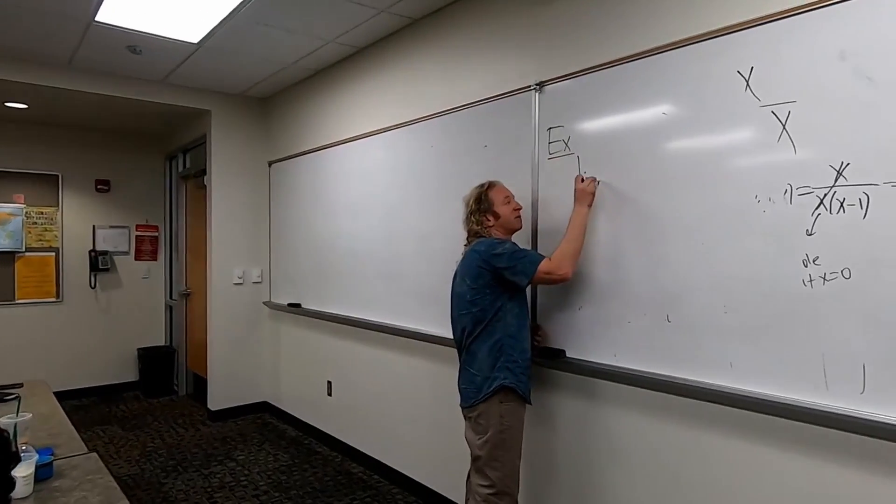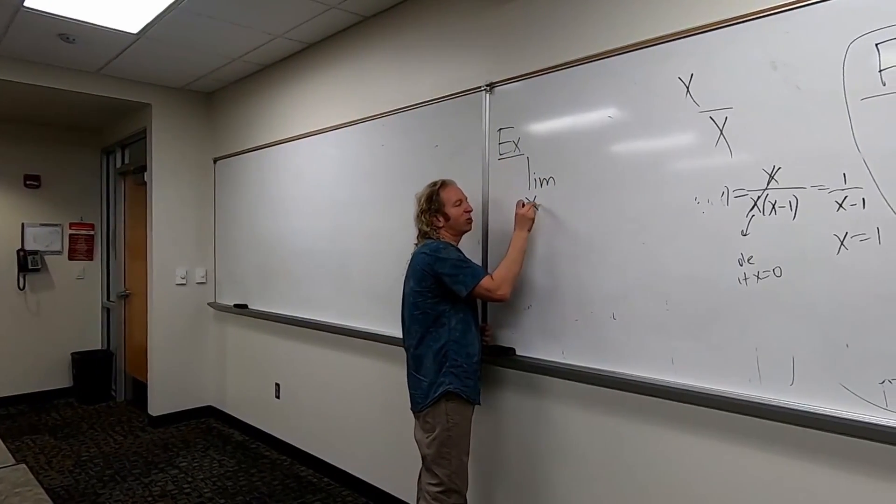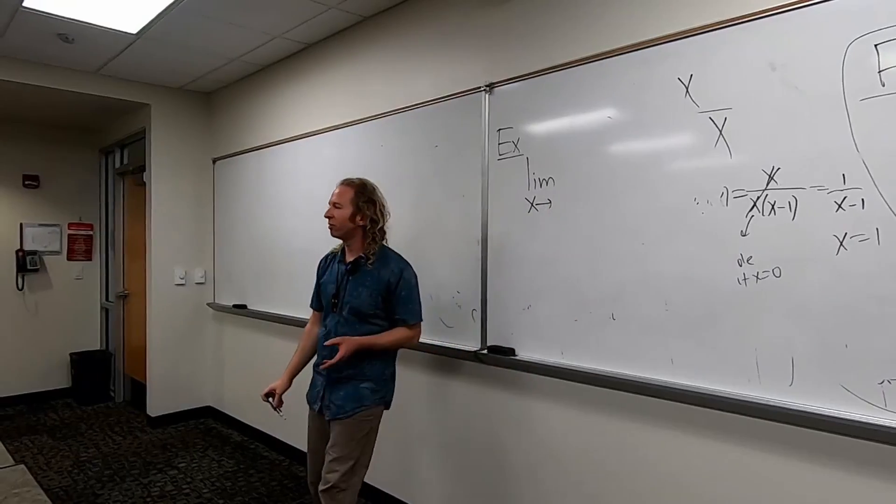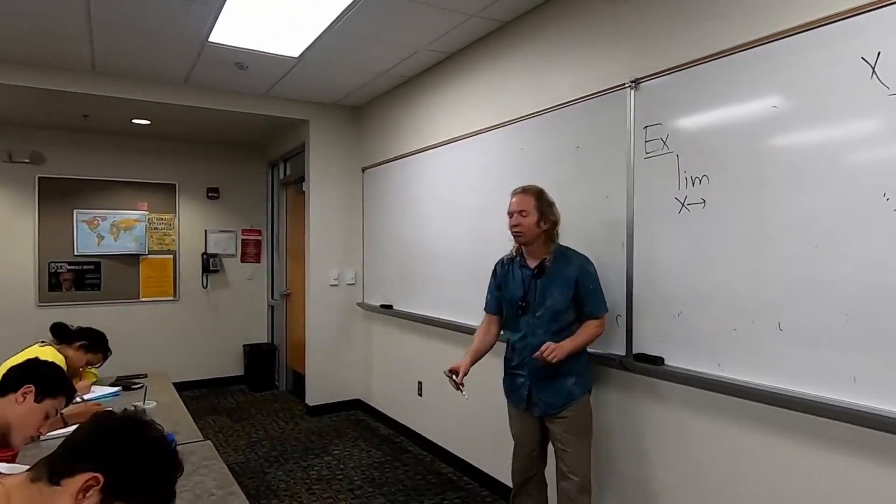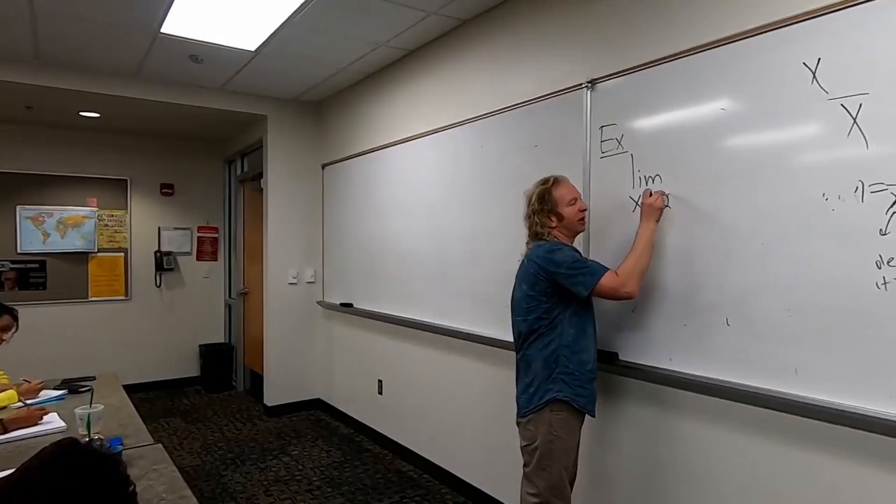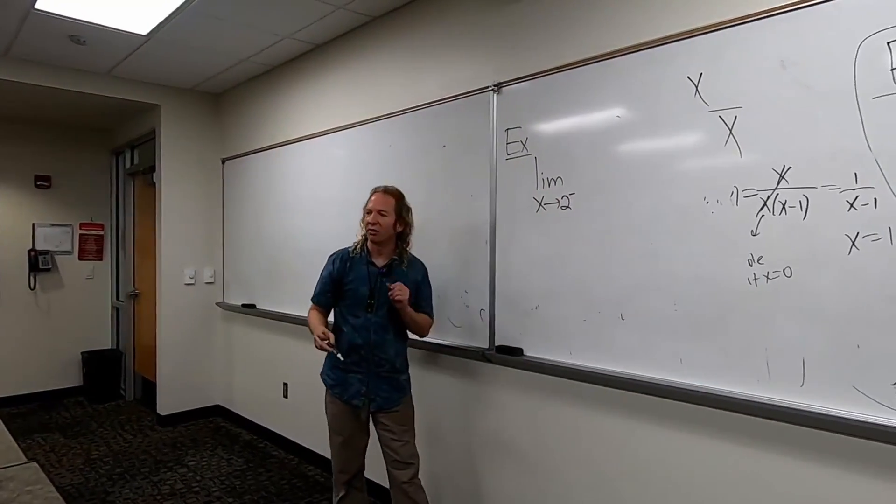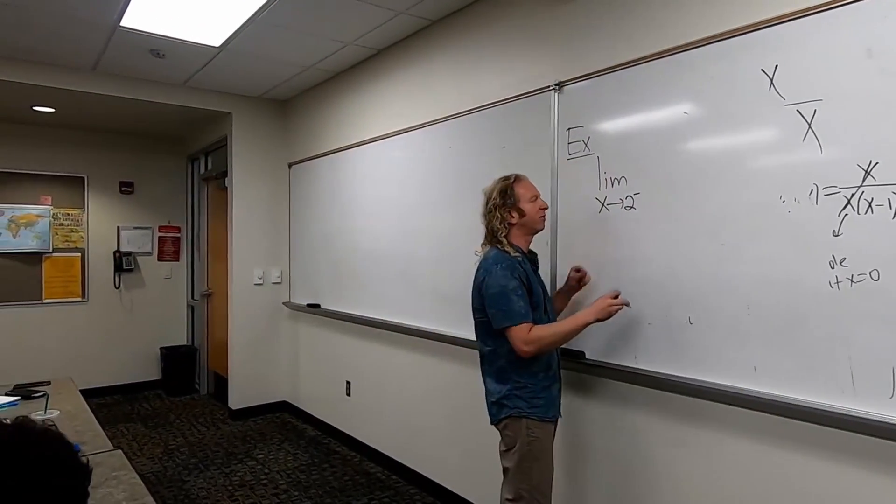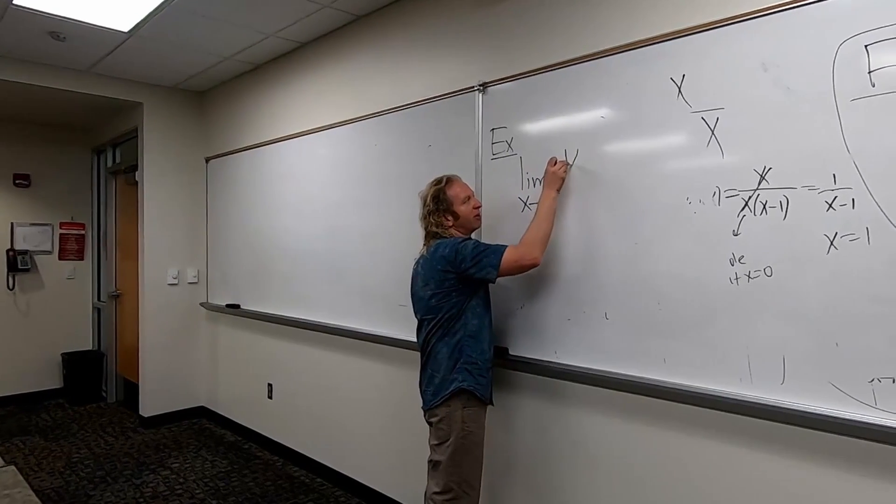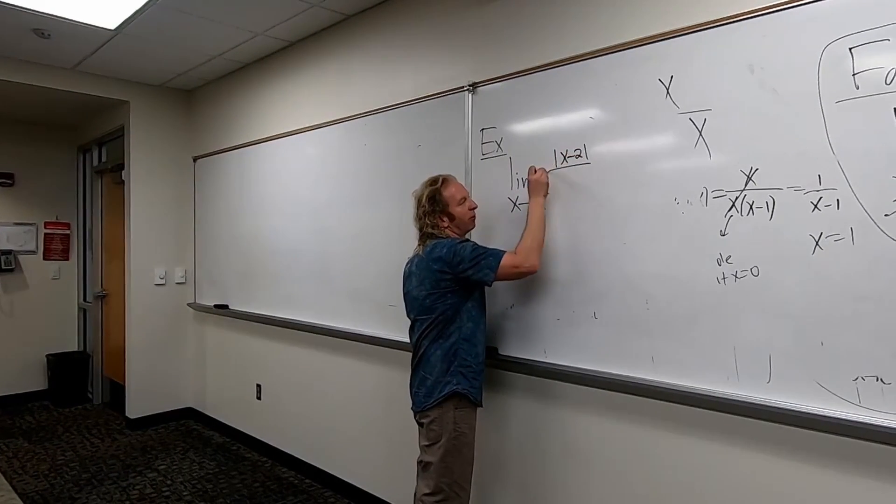So let's compute the limit. This is tough. As x approaches, let's approach a positive number, let's just go to 2. And let's approach from the left. And the expression that we have to find the limit of is the absolute value of x minus 2 over x minus 2.